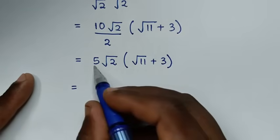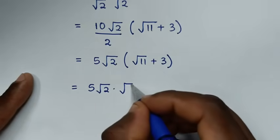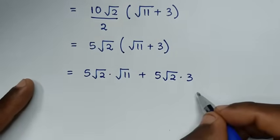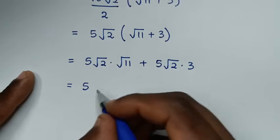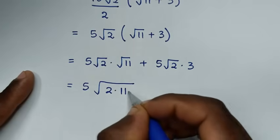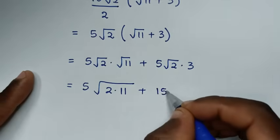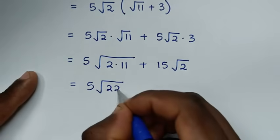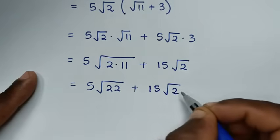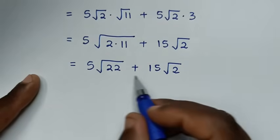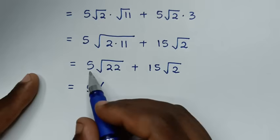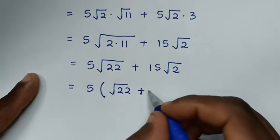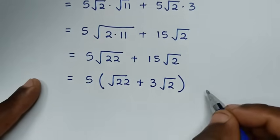Distributing gives 5 times square root of 2 times square root of 11, plus 5 times square root of 2 times 3. Taking 5 as a common factor: 5 times (square root of 22 plus 3 times square root of 2). Dividing through by 5 inside, the simplified result is square root of 22 plus 3 square root of 2.